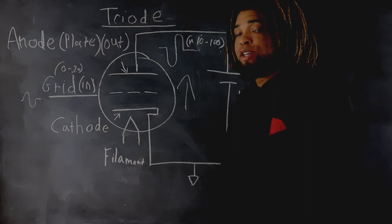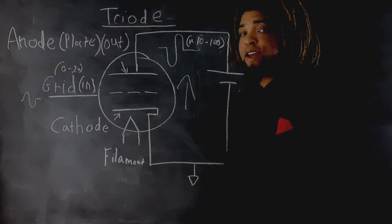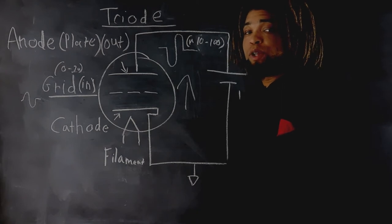As a general rule, the control grid of a triode is operated between zero and one volt.